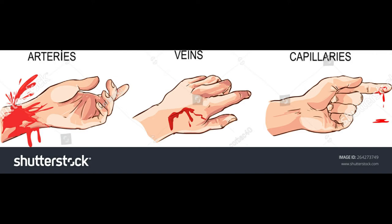Venous bleeding flows steadily because it is under less pressure — it doesn't spurt and is easy to control. Arterial bleeding spurts with each heartbeat; the pressure that causes this also makes it difficult to control. This is the most serious type because a large amount of blood can be lost in a very short time.